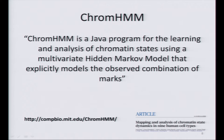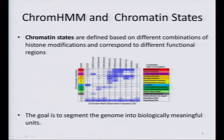If you read the definition of ChromHMM, it can be a little bit scary. It says it's a Java program for the learning and analysis of chromatin states using a multivariate hidden Markov model that explicitly models the observed combination of marks. But in practice, when we talk about chromatin states, essentially what we are trying to do is find combinations of histone modifications and try to assign a name that is meaningful and corresponds to the functional region.